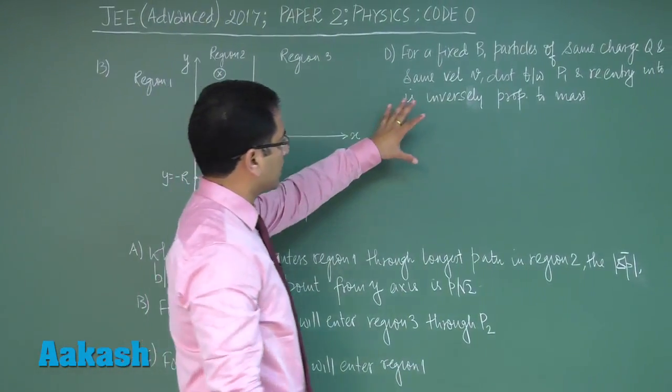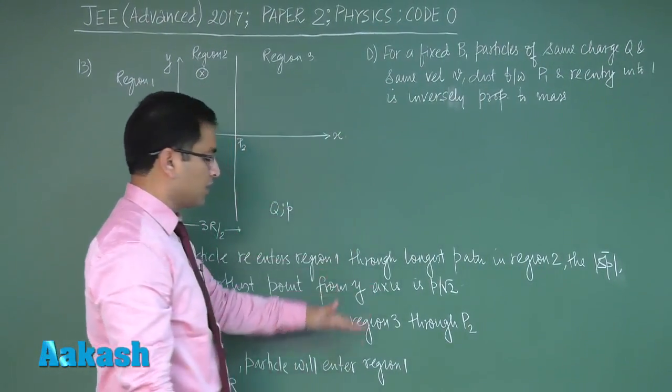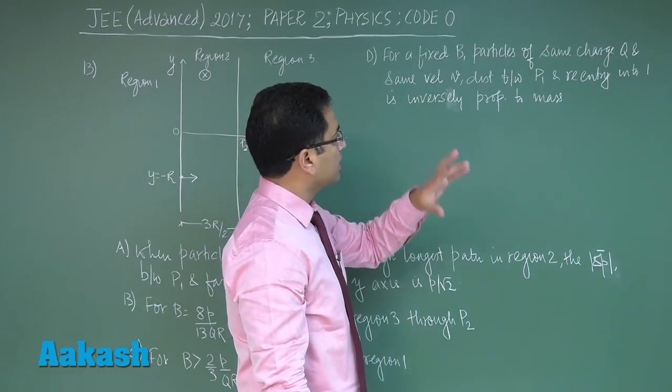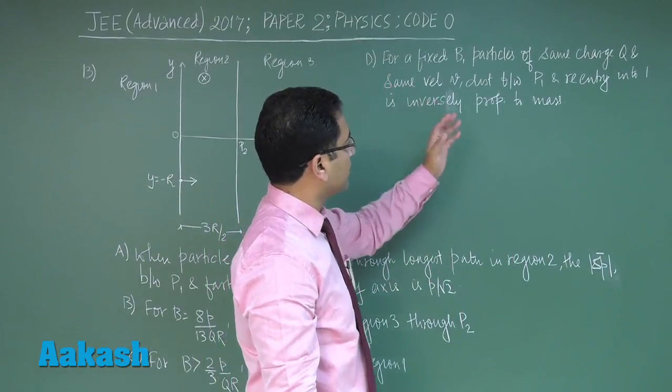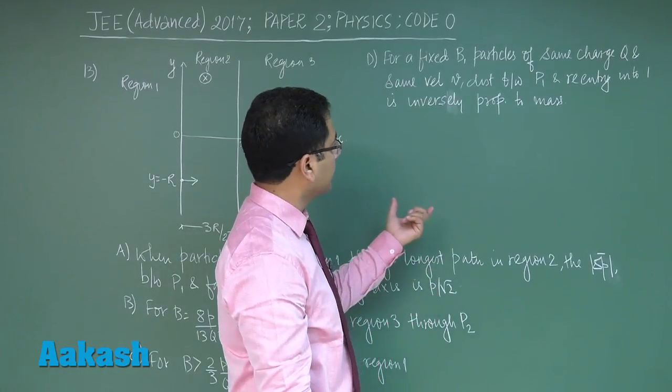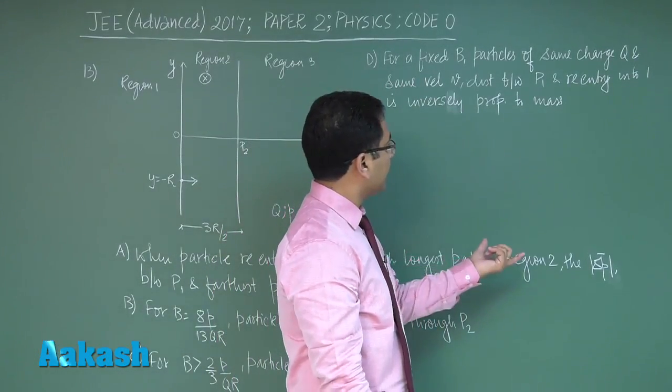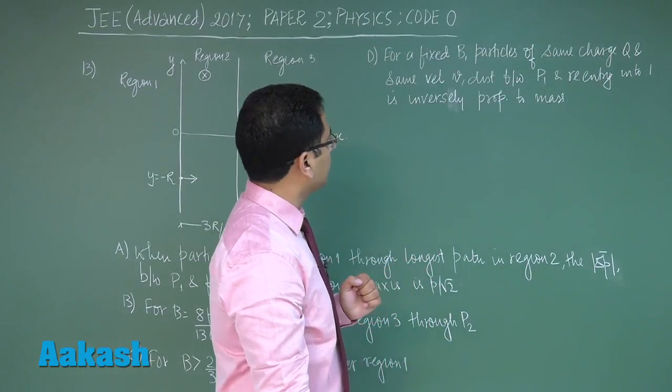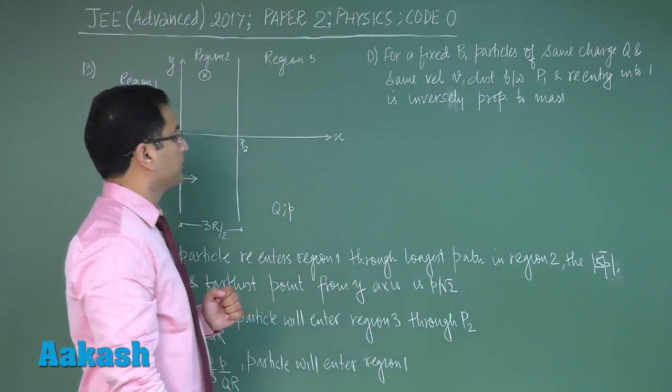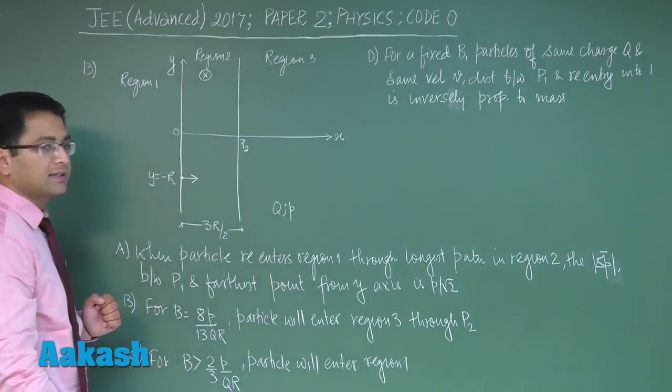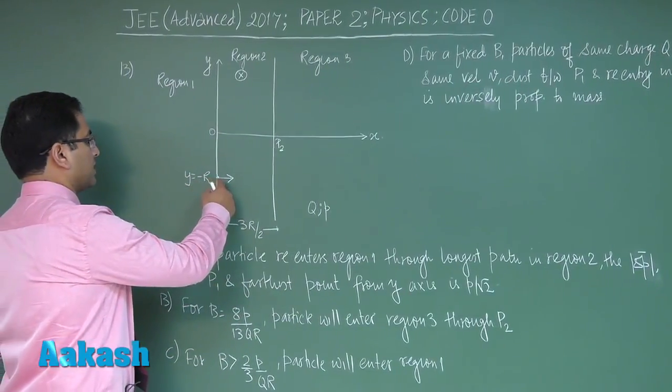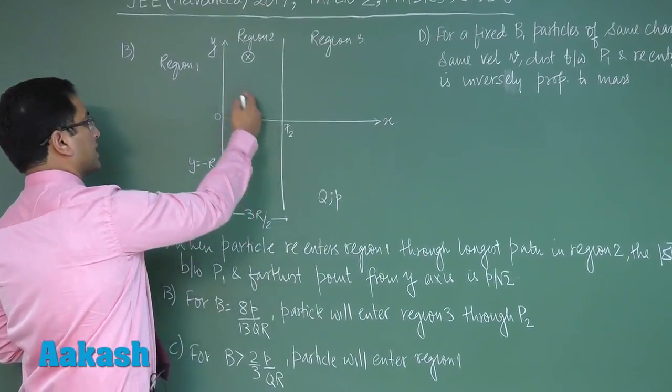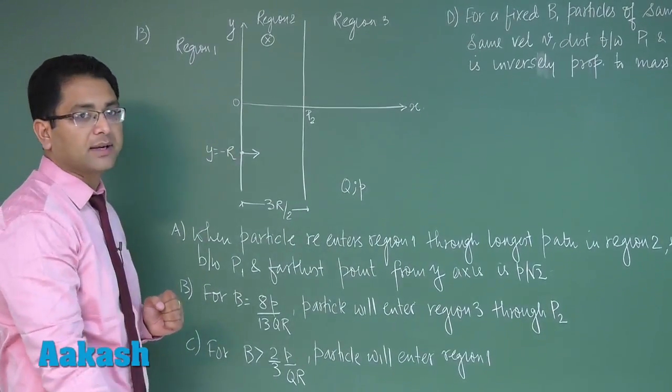First I will directly do with d so that I can create a space for these three questions. For a fixed B, particle of same charge q and same velocity v, so if there's a difference it's in mass. Distance between p1 and re-entry into 1 is inversely proportional to mass. That means if the particles would be re-entering into 1, it would be making a semicircle and coming back to region 1.